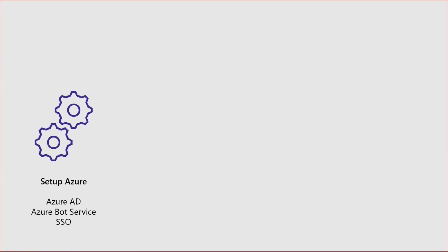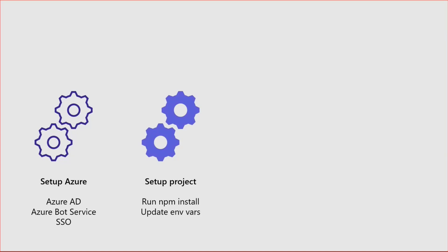I just want to quickly cover the scenario of what you typically go through at the moment to create a Microsoft Teams app. Let's say you create a project — creating a bot. One of the things you're going to have to do first is go into Azure and do some setup: configure Azure AD app registrations, an Azure bot service, and configure SSO as well on Azure AD. You're then going to have to set up your project — maybe cloning a sample, running NPM install to get all the modules in, and updating the environment variables, adding all the IDs and secrets of everything you've set up in Azure, moving all those across.